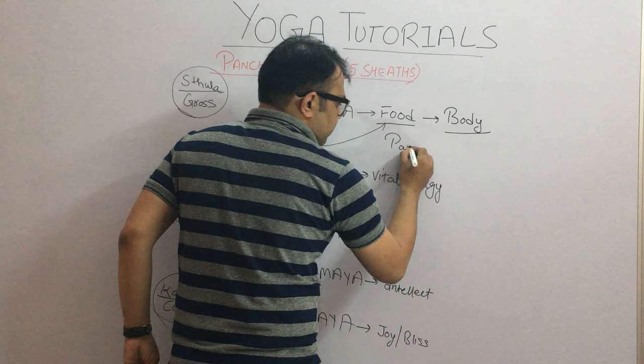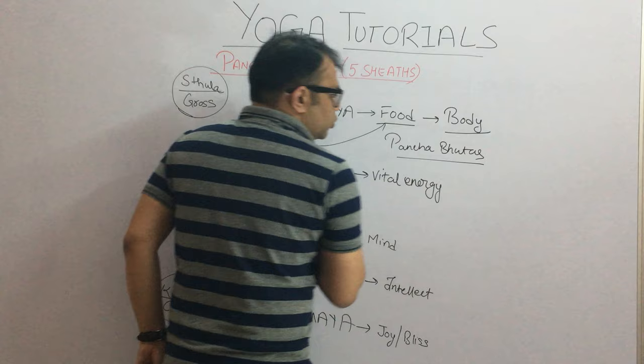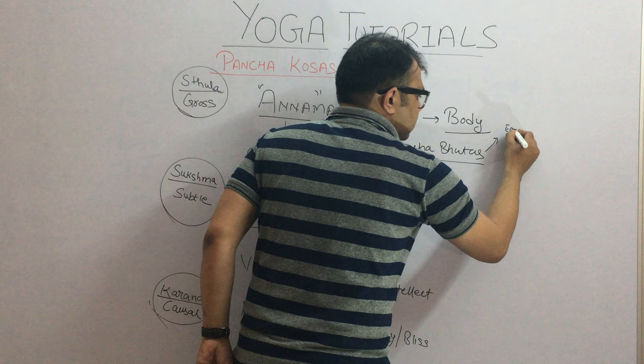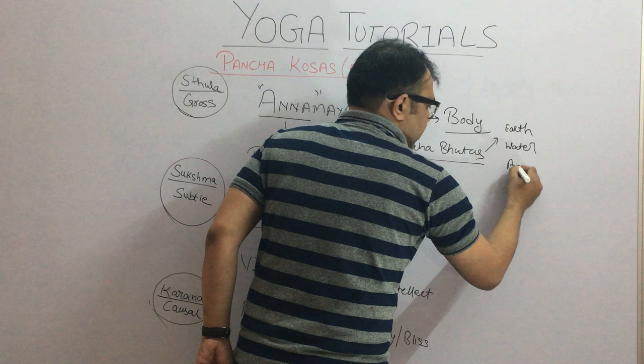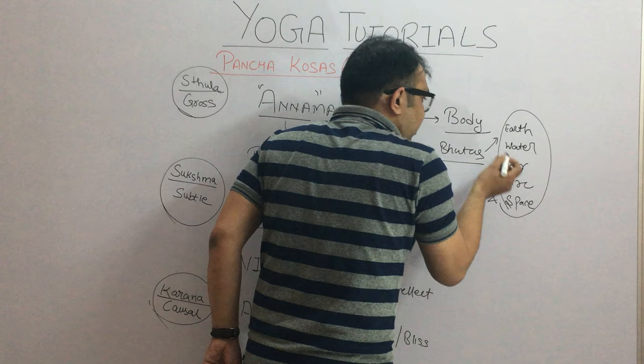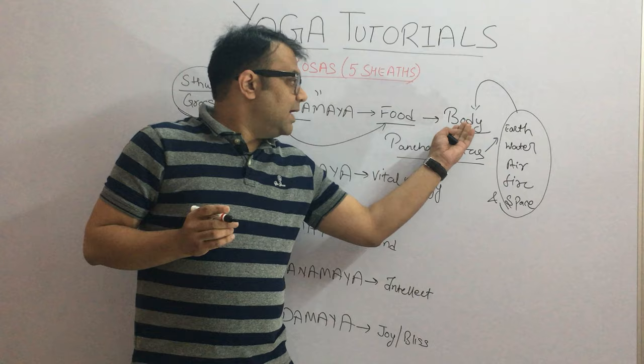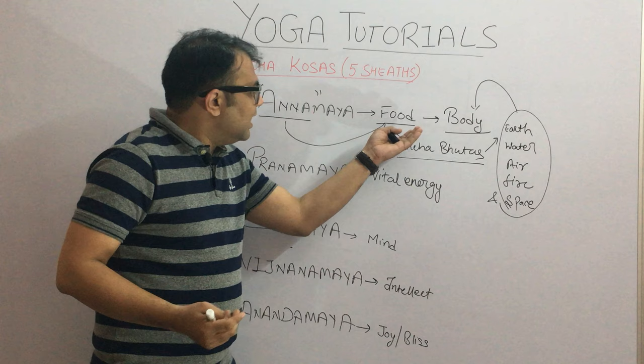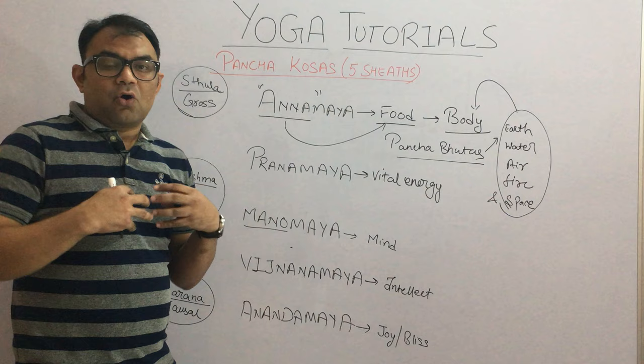In this Kosha, there is another concept of Panchabhutas. Panchabhutas is nothing but the five elements: earth, water, air, fire, and space. These Panchabhutas are the basic things through which this body is actually made up of. So Bhrigu found that the body, and these elements, are the cause of the creation of this universe.